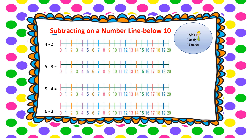Now we're going to look at subtracting on a number line — taking away, so our numbers are going to get smaller. We always start with the big number. Our first question is 4 take away 2. I start with the first number, 4, but this time I'm counting backwards — 2 spaces back: 1, 2. I land on 2, so 4 take away 2 equals 2.